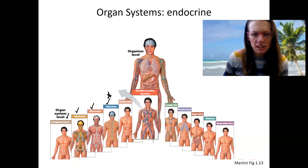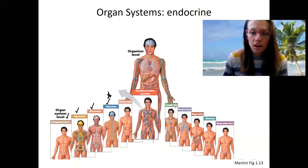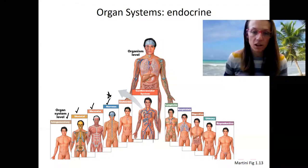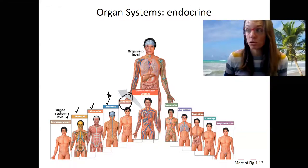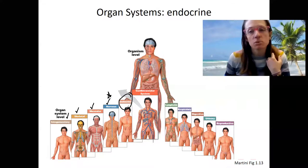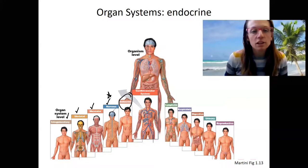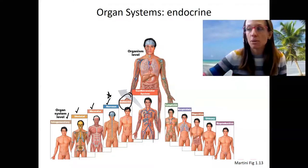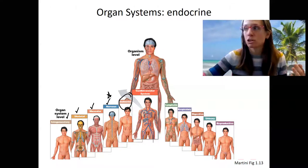We are going to touch upon each of the remaining systems in the spring, focusing on some more than others. For example, we'll spend a little less time on lymphatic and more time on cardiovascular. We're going to start with endocrine — endocrine is glands that produce hormones and it's one of my favorites. Endocrine and nervous system are two of the systems that really control the others to regulate homeostasis; they are the control systems.